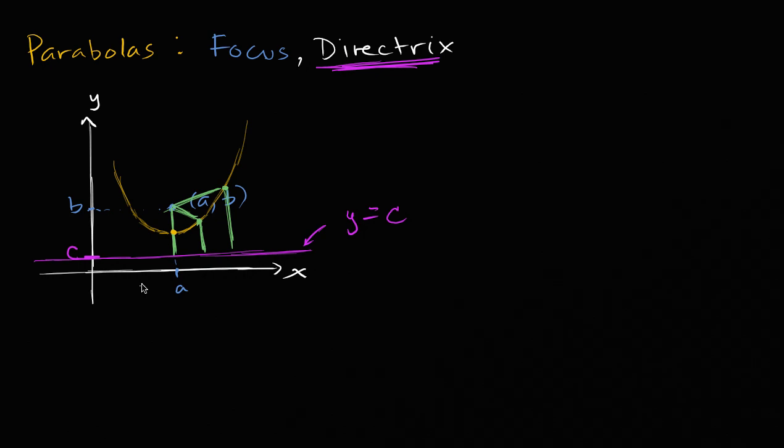So hopefully you get what I'm talking about when I say that the parabola is a set of all points that are equidistant to this focus and this directrix. So any point along this parabola, the distance to the focus should be the same as the distance to the directrix.